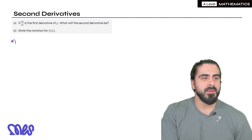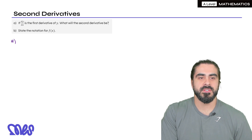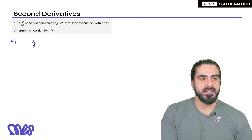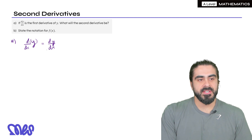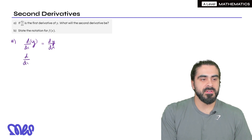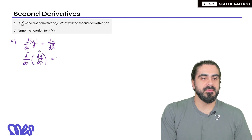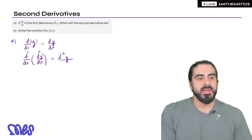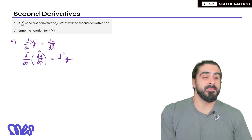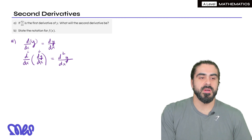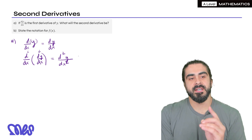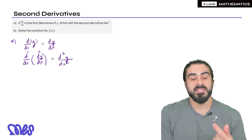So if dy/dx is the first derivative of y, what would the second derivative be? If you take y and want to find its gradient, you do d/dx of y, which we write algebraically as dy/dx. Now if we want to differentiate this again, we are taking d/dx of (dy/dx). The notation for this is: d times d is d-squared, and dx times dx is dx-squared. So the second derivative is written as d²y/dx².